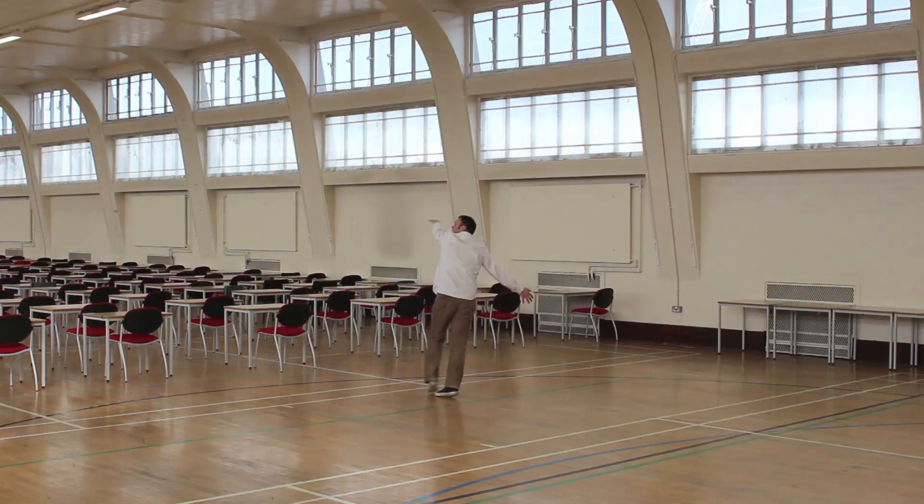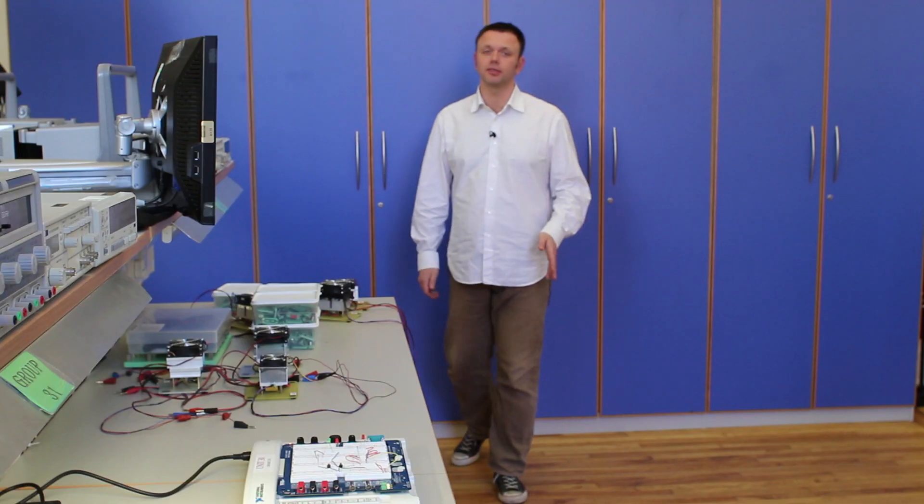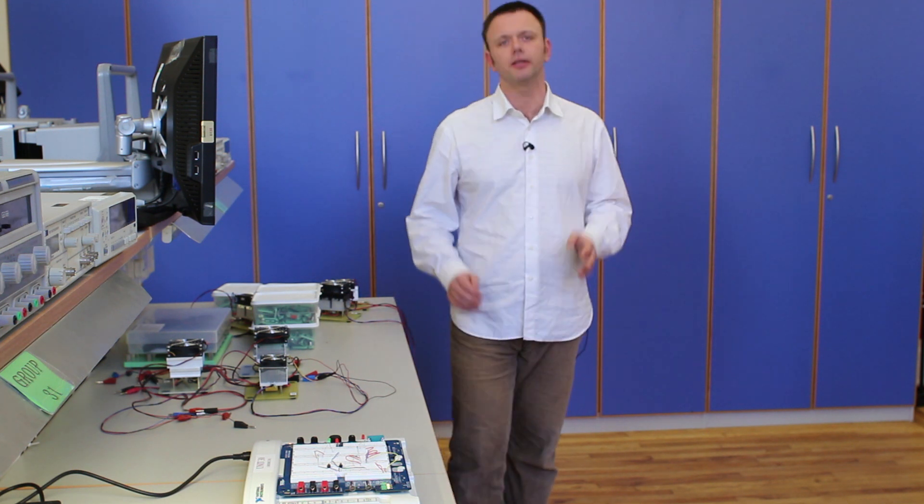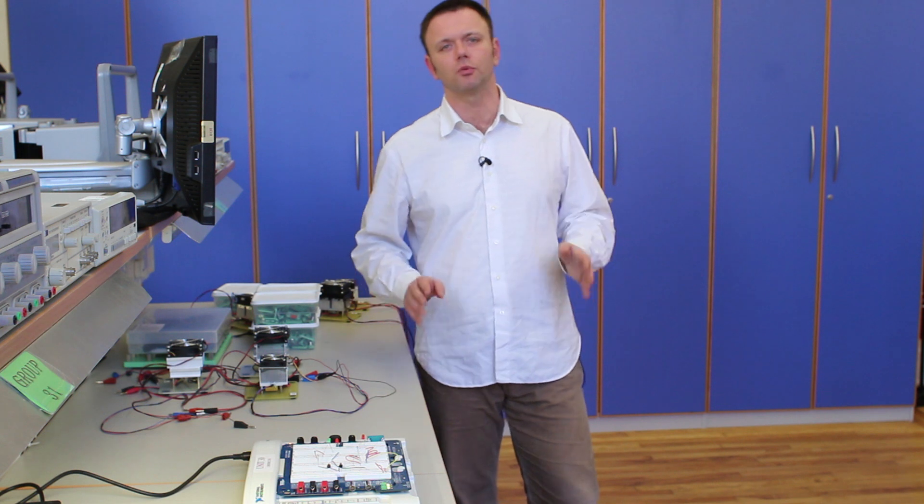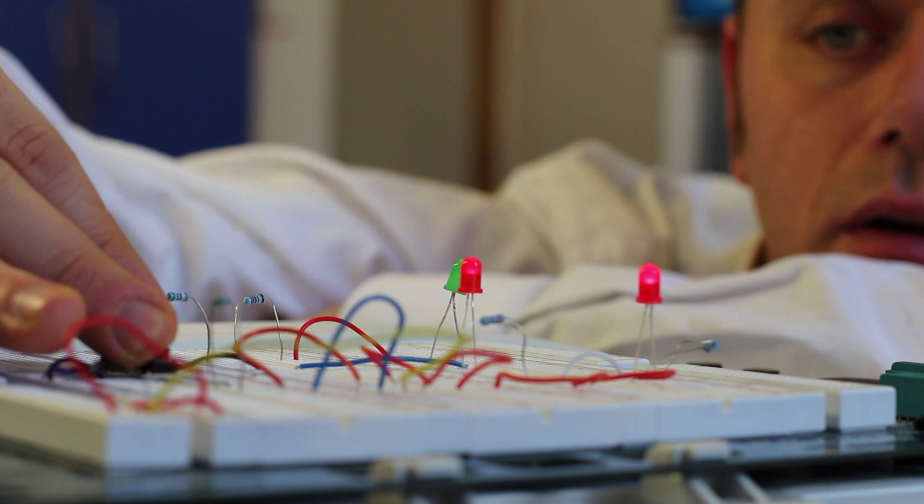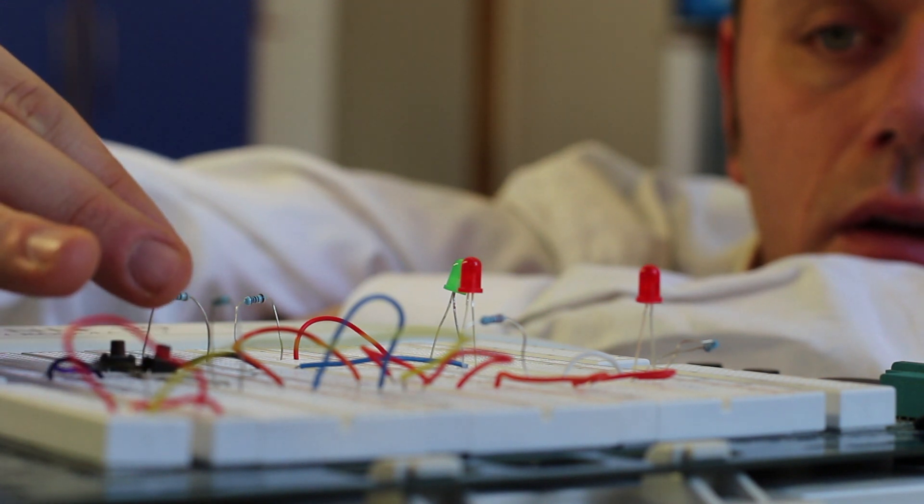In engineering disciplines, we mostly deal with three different types of systems, and these generally differ in terms of the speed at which the transients occur. The fastest group of systems are electrical. Most of the engineers dealing with these systems assume that the transition from one state of voltage or current to another occurs pretty much instantly, so we assume here that the transient time is negligible.